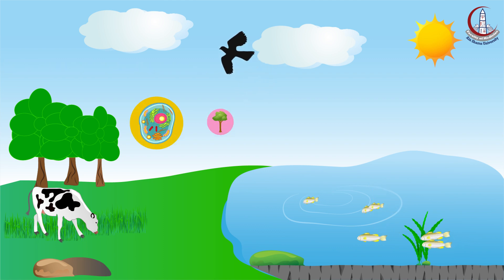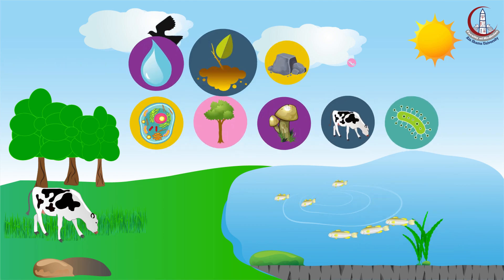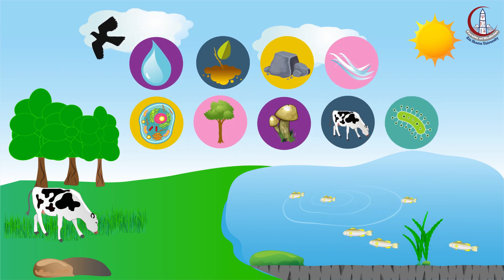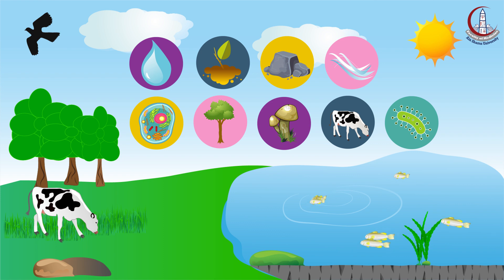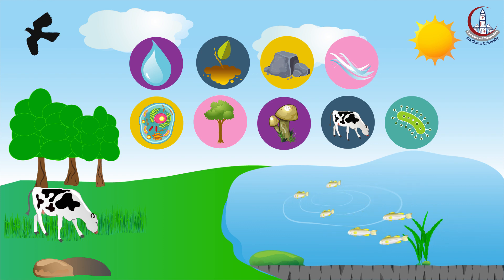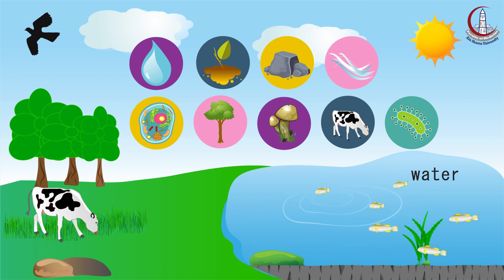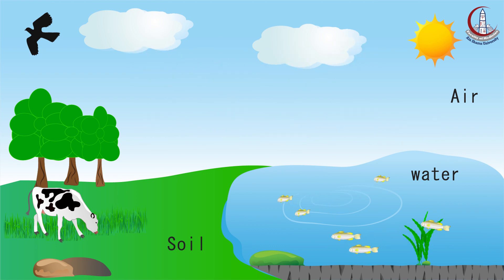These external factors include living and non-living, material and non-material elements which surround man. Environment includes water, air, and soil, in addition to other factors.